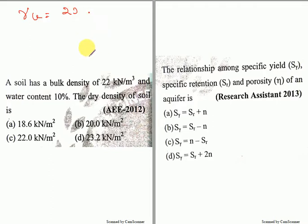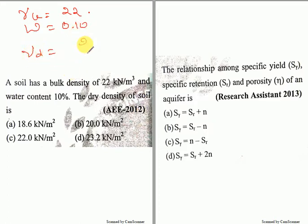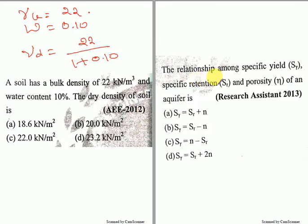A soil has a bulk density γ equal to 22 kilonewton per meter cube and the water content is equal to 10 percent, which can be written as 0.10. The dry density of the soil is very simple: γb divided by 1 plus 0.10. Please comment the answer in the comment box. This question was also asked in the BWSSB Karnataka State Board examination conducted in March 2019.